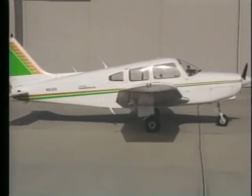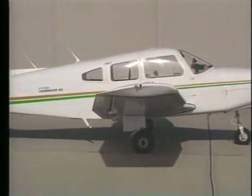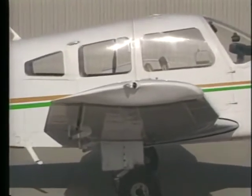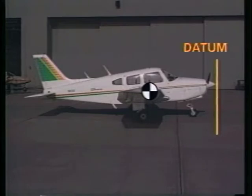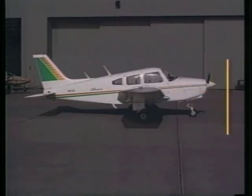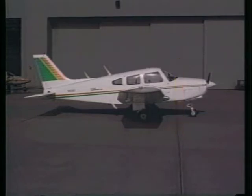When you have determined that your loaded airplane will not exceed the maximum weight, you need to ensure that it is safely balanced. An airplane is in balance when its center of gravity, or CG, is located within the limits prescribed by the manufacturer. The CG is measured in inches aft of a reference datum, which is an imaginary vertical line set at some point along the longitudinal axis of your airplane. The datum can be set anywhere the manufacturer chooses. Some popular locations are a point ahead of the airplane, the firewall, or the leading edge of the wing.